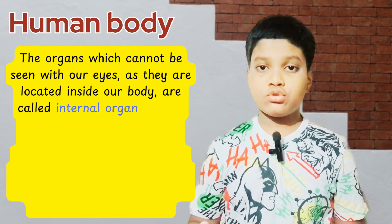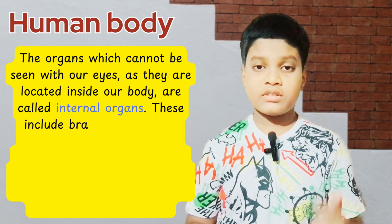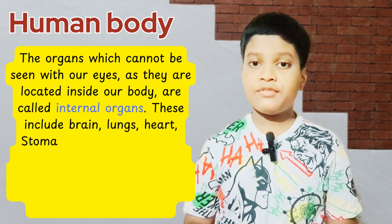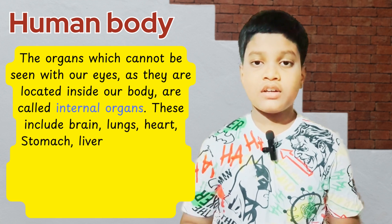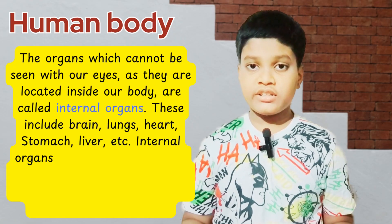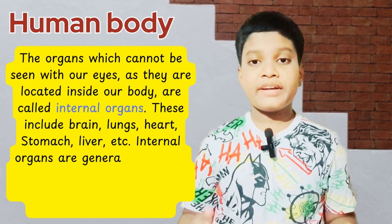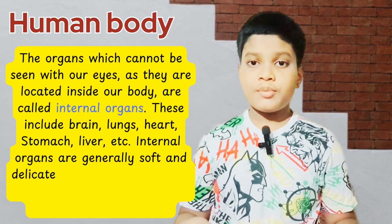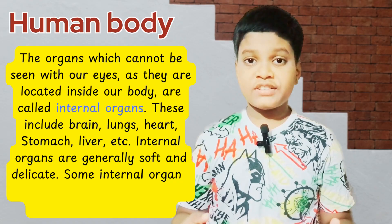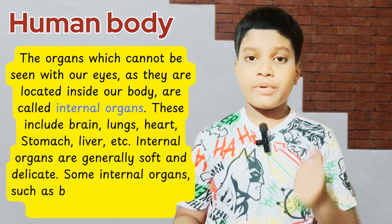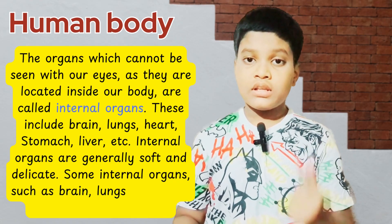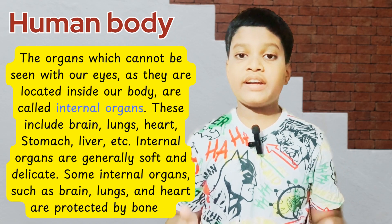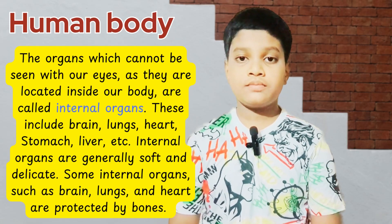Internal organs include brain, lungs, heart, stomach, liver, etc. Internal organs are generally soft and delicate. Some internal organs such as brain, lungs and heart are protected by bones.